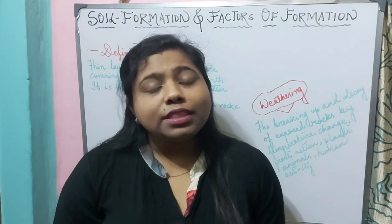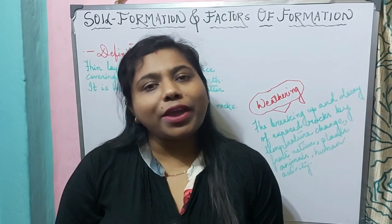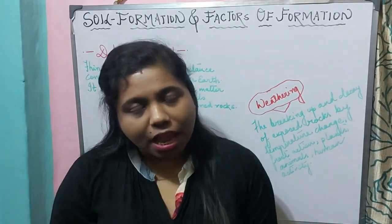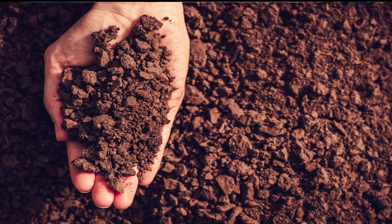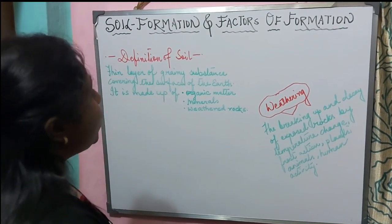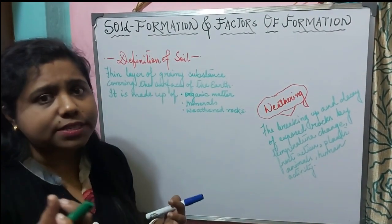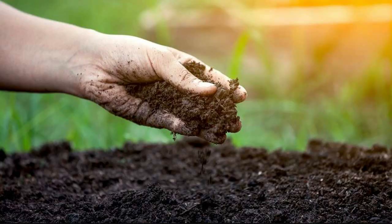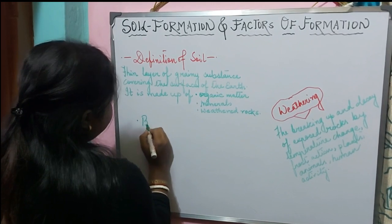We will cover how the soil is formed, the layers of soil, and the factors affecting the formation of soil. Let us first know the definition of soil. What is soil? The thin layer of a grainy substance covering the surface of the earth is known as soil. It is a renewable substance which covers the surface of the earth.